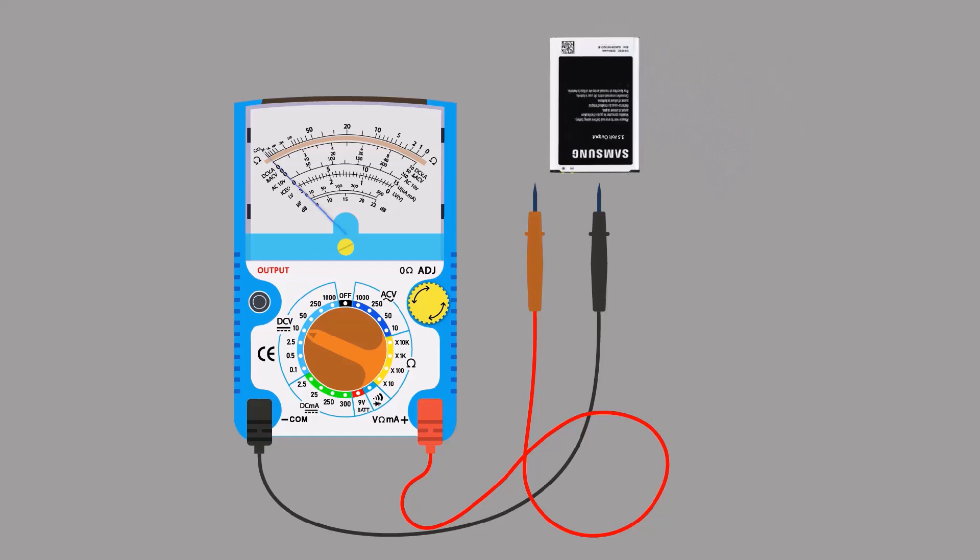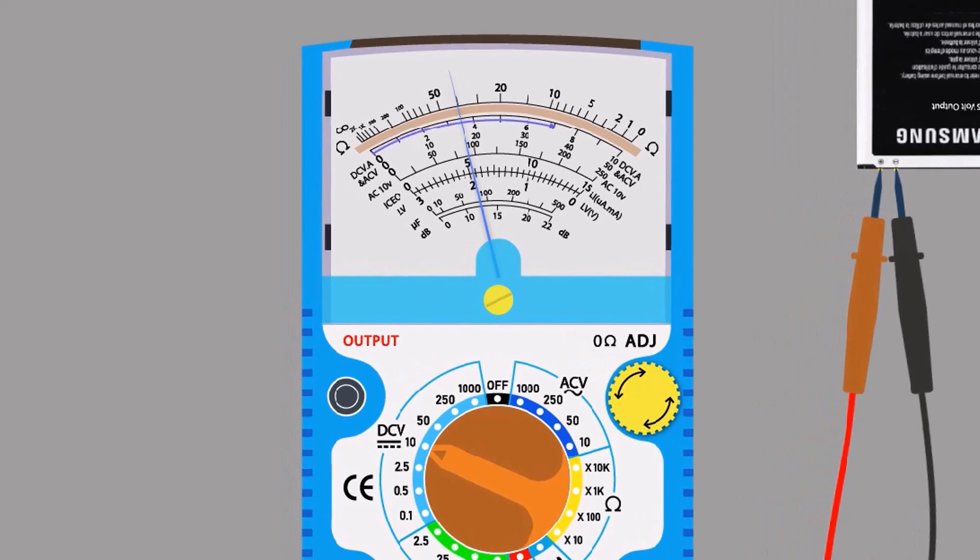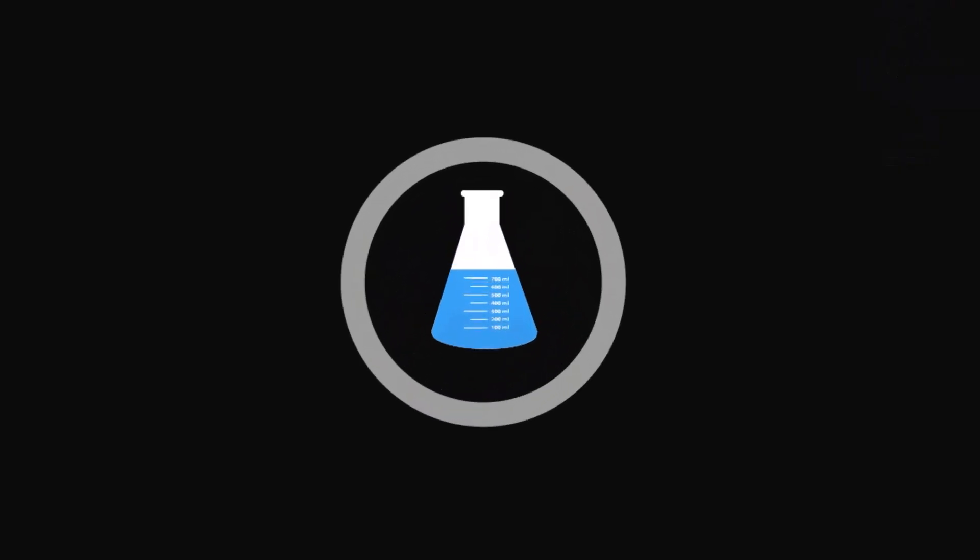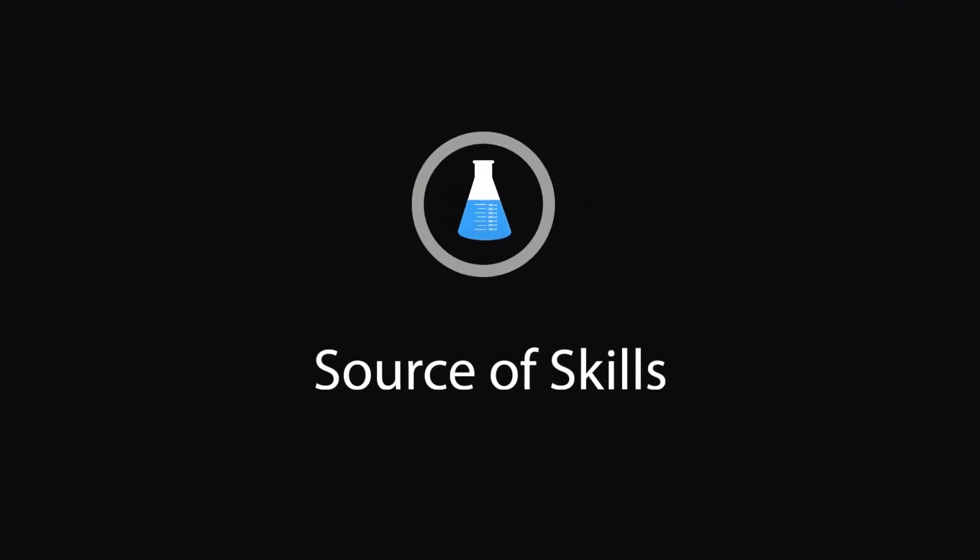In this animation, you will learn how to measure DC voltage with the help of an analog multimeter. Hello guys, welcome to our YouTube channel, Source of Skills. Please like and subscribe for more informative videos.